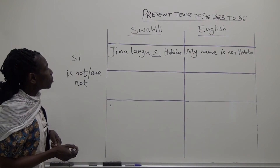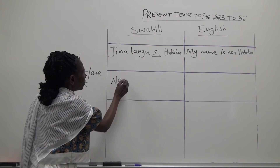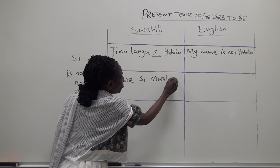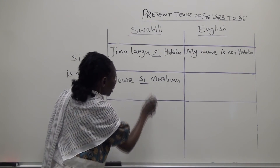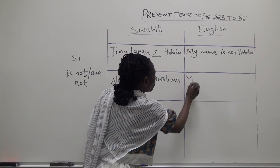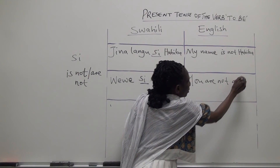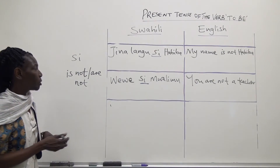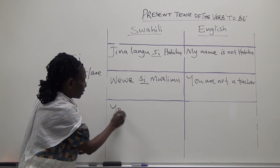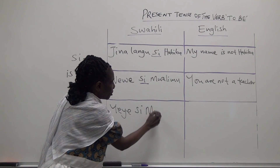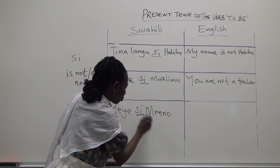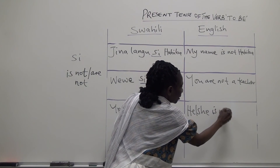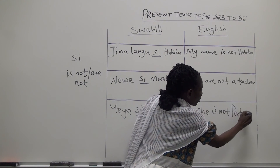The next sentence would be: 'Wewe si mwalimu.' And the English translation of this sentence would be: you are not a teacher. The third example would be: 'Yeye si Mreno.' And the translation in English would be: he/she is not Portuguese.